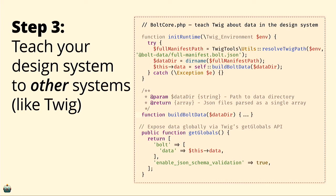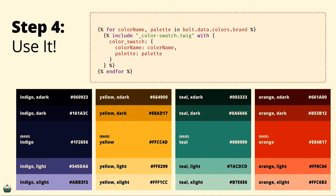Step three: teach other systems about your design system. We realized that if we could teach Twig — not Drupal, not Pattern Lab, but Twig itself — where our data lives, not just color palette data but all the data, then Twig could look there, grab that data, and make it globally available. This allows us to have automatically generated, always up-to-date, evergreen color palette documentation that's never going to become obsolete.